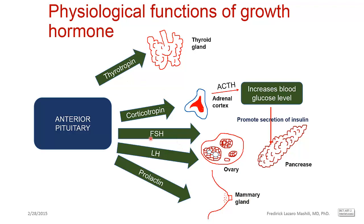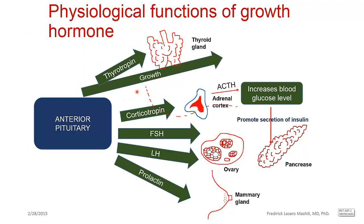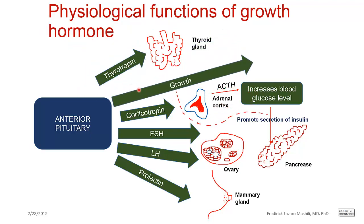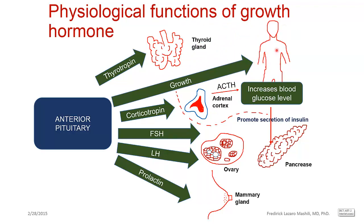If you look at the hormones produced by the anterior pituitary, most of them don't have direct effects. For example, thyrotropin has to stimulate the thyroid gland to produce thyroid hormones, and it is those thyroid hormones that have the direct effect to increase metabolism. But of particular importance is growth hormone, which has a direct effect to promote growth in many tissues of the body.